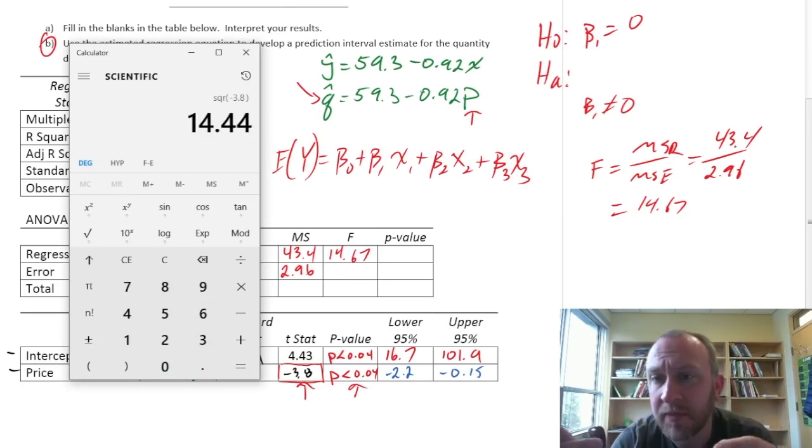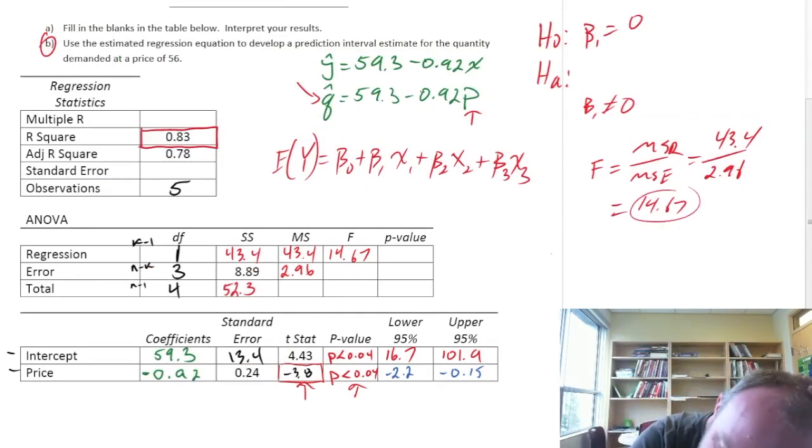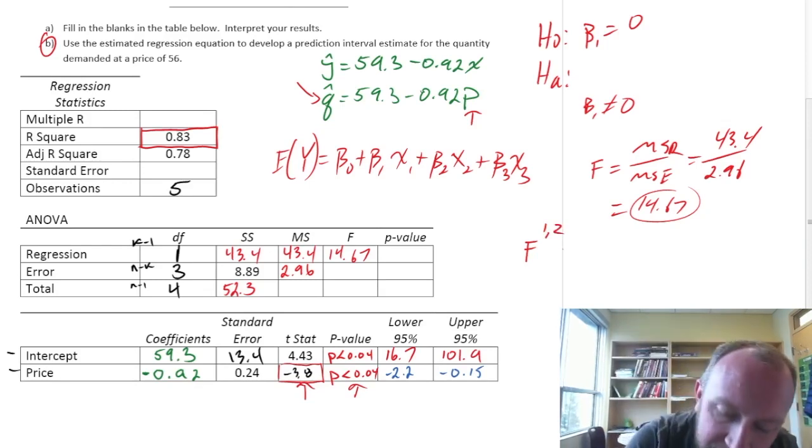14.44. So, the only reason why that's not exactly the same as our 14.67, is that there's some rounding error. Anytime we have an F-statistic with one degree of freedom in the numerator, and, let's say, z degrees of freedom in the denominator, this is going to be exactly equal to the t-statistic, with that same z degrees of freedom, and square it.